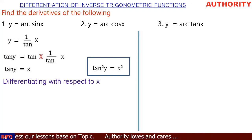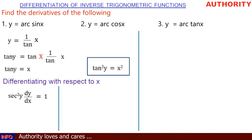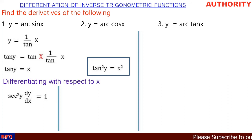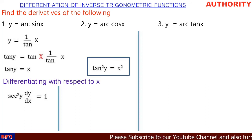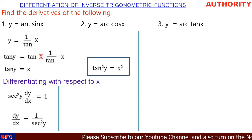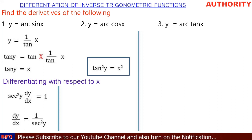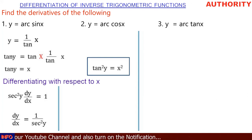Differentiating tan(y) equals x with respect to x: the derivative of tan(y) gives sec²(y) · dy/dx, and the derivative of x gives one. So sec²(y) · dy/dx = 1. Dividing both sides by sec²(y): dy/dx equals one over sec²(y).